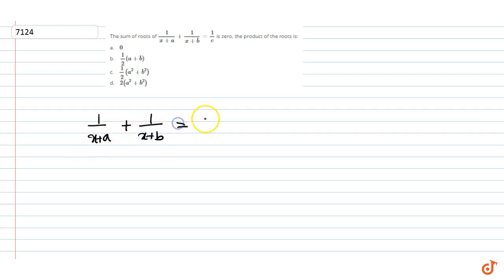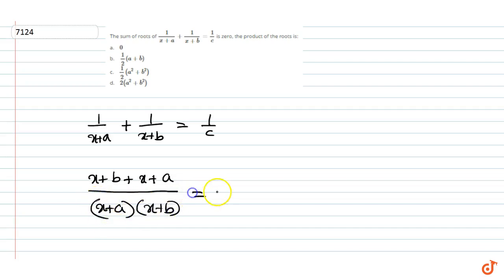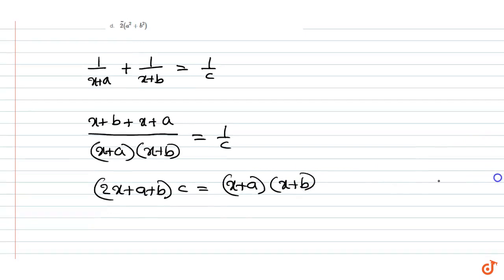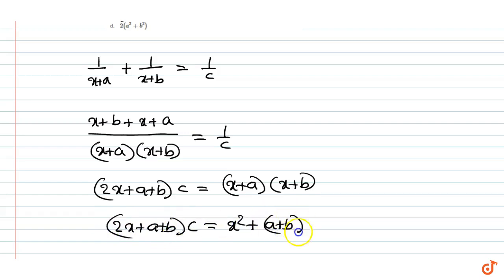This can be written as (x+b + x+a) / ((x+a)(x+b)) = 1/c. Cross multiplying, we get (2x + a + b) * c = (x+a)(x+b), which expands to (2x + a + b) * c = x² + (a+b)x + ab.